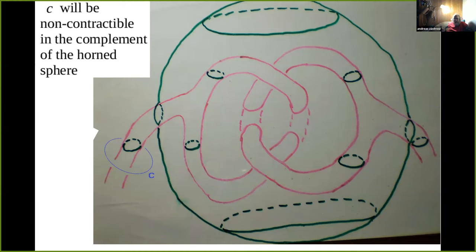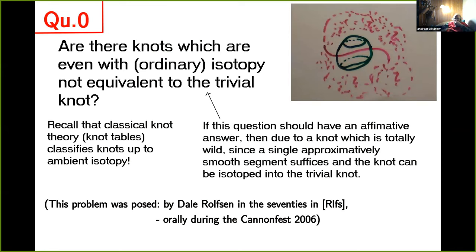It's time to tell you why I asked this funny isotopy extension theorem. I was interested in the question whether there are knots which are even with ordinary isotopy not equivalent to the trivial knot. That's a question for me because I am a student of knot theorists. Otherwise, I'm currently interested in these wild constructions. Probably a long-standing problem, as I learned from Sergey. It was already posed by Rolfsen in the 70s. I got really interested in it during the Cantor fest, which was the only conference of the series which I have really attended already.